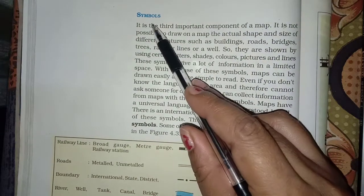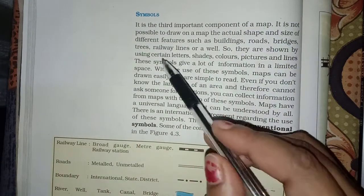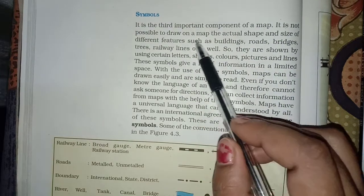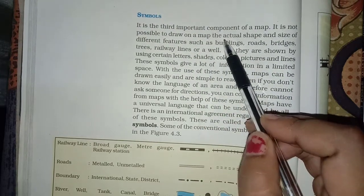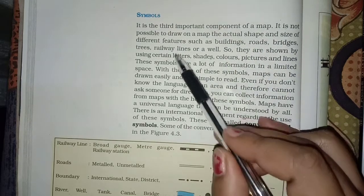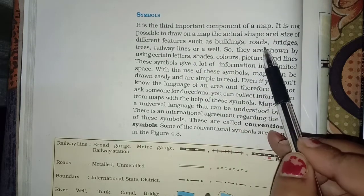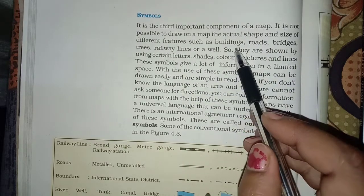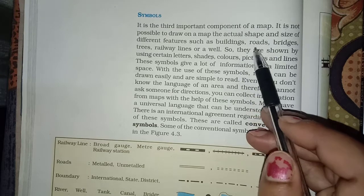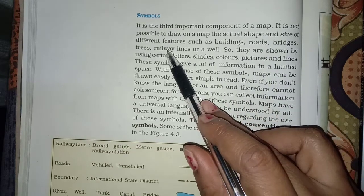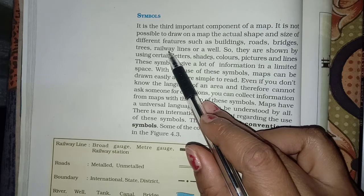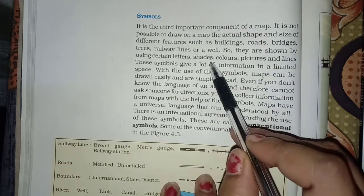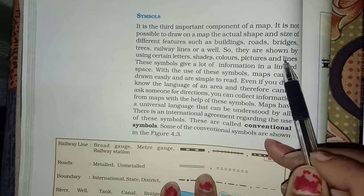Actual shape and size of different features such as buildings, roads, bridges, trees, railways lines or a well, they can't actually be shown on maps. So, they are shown by using certain letters, shades, colors, pictures and lines.